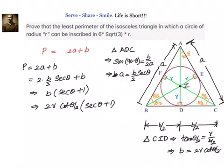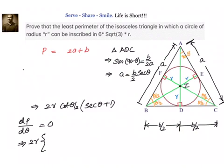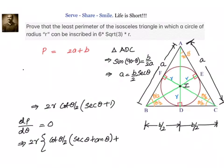We need to prove the least perimeter is 6√3·R. Let us compute dP/dθ and equate it to zero. We have 2R·cot(θ/2)·(sec θ + 1), and applying the UV formula: U = cot(θ/2), V = (sec θ + 1). The derivative gives: cot(θ/2)·sec θ·tan θ + (sec θ + 1)·(−cosec²(θ/2)·(1/2)) = 0.